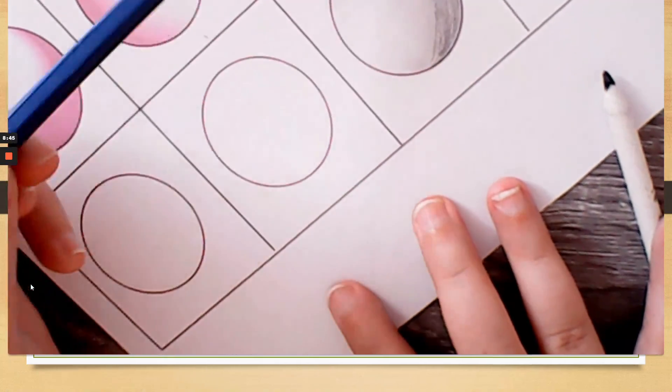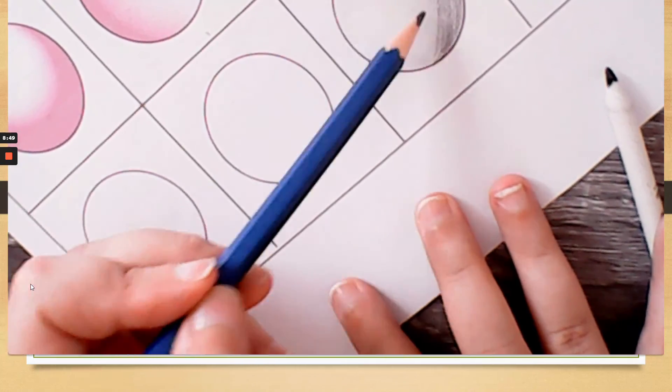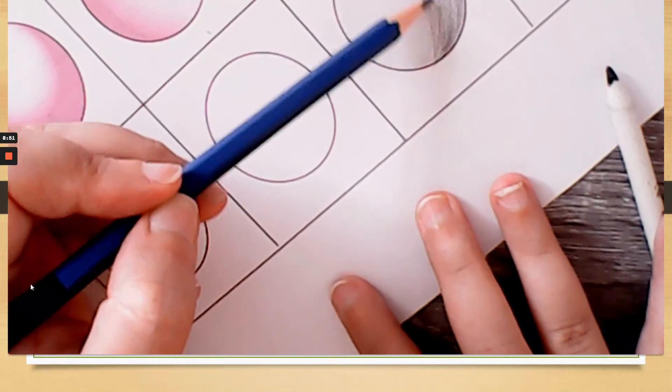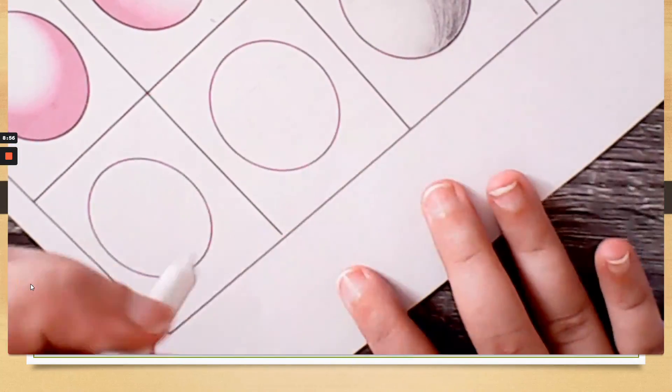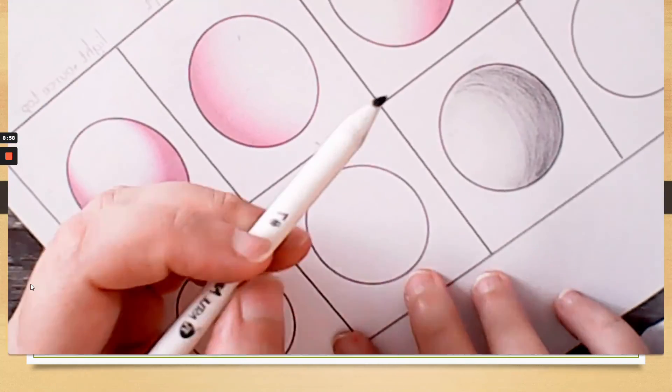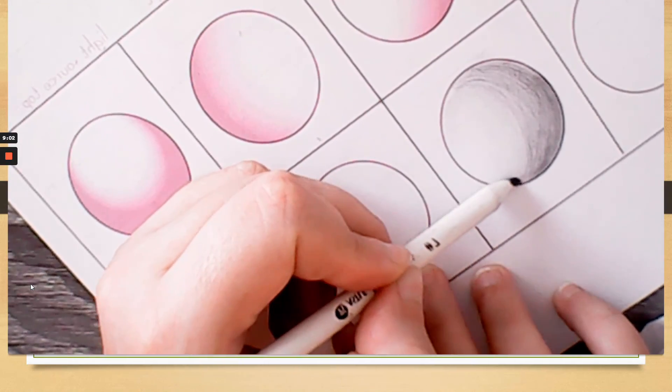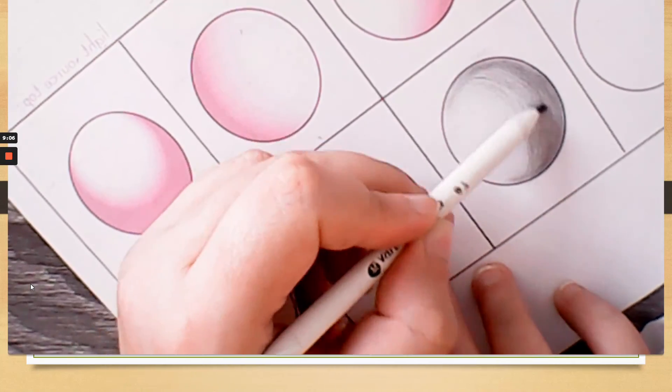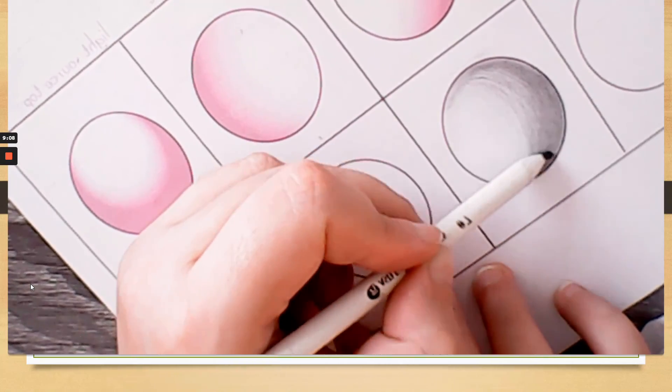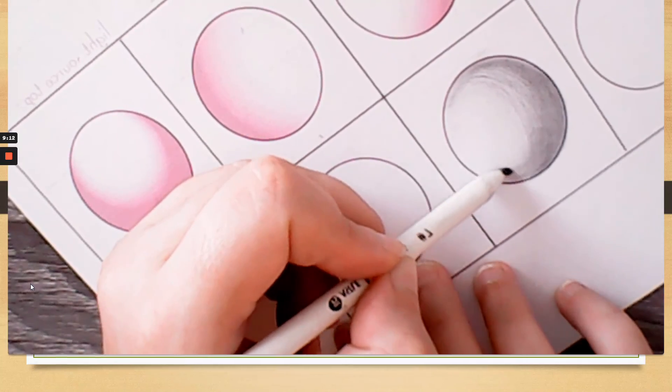Still making sure you go lighter. Still making sure you follow the shape. So again, I'm going to blend it out. So I follow the shape. And now I'm doing my circles.